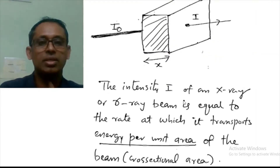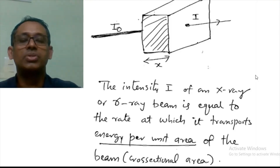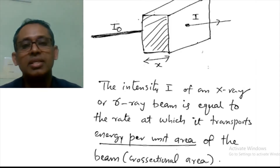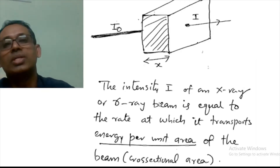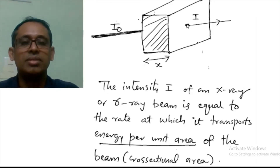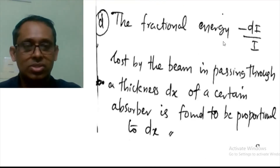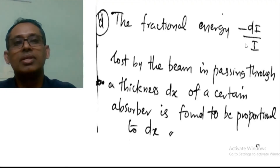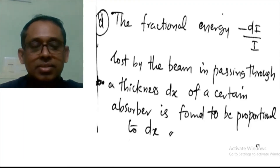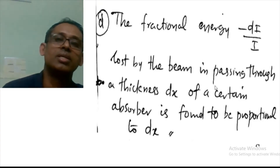The intensity of an external gamma ray beam decreases as it passes through an absorbing material, because its energy is continuously lost through these three mechanisms. Intensity is the energy per unit area — the rate at which the beam transports energy per unit area — and that intensity gradually decreases. The fractional energy loss is given by −dI/I, where dI is the change in intensity as the beam travels through a small distance dx.